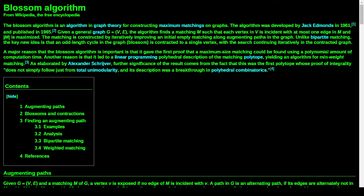So basically, there are never two edges in M that are incident to the same vertex. This is a pairing system - each point is paired with one other point or with no point - and we're trying to maximize the cardinality of M, meaning that the most points are covered.